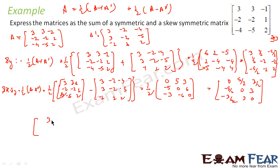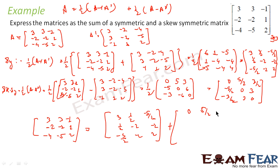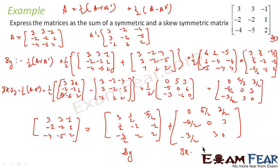So I can say that matrix A is nothing but the sum of the symmetric matrix [3, 1/2, -5/2; 1/2, -2, -2; -5/2, -2, 2] plus the skew-symmetric matrix [0, 5/2, 3/2; -5/2, 0, 3; -3/2, 3, 0]. This matrix is nothing but symmetric matrix plus skew-symmetric matrix.